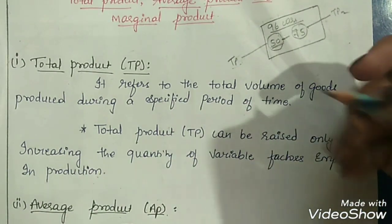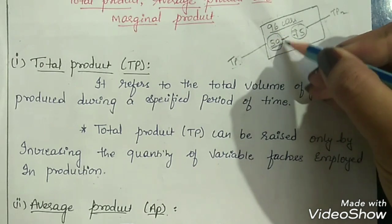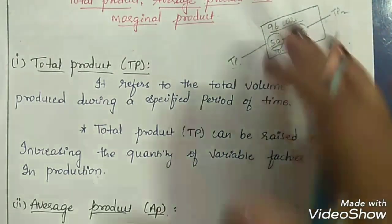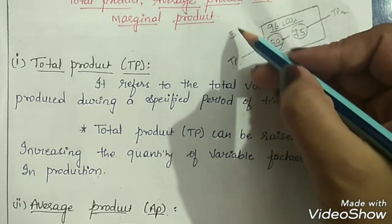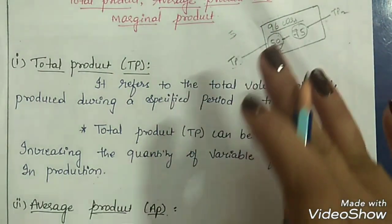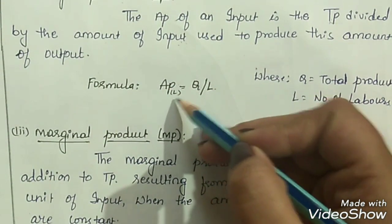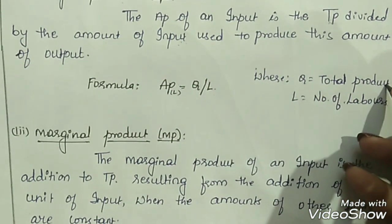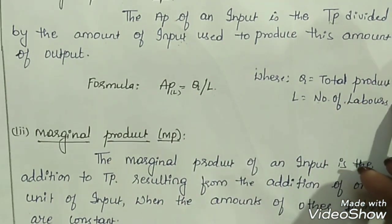Assume that we used 10 labors for producing 50 cars. So 50 divided by 10 gives us 5, which becomes our average product. The formula for average product of labor is AP = Q divided by L, where Q refers to total product and L refers to number of labors.